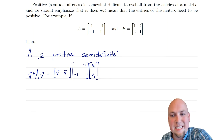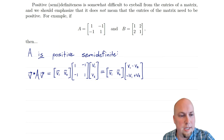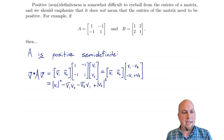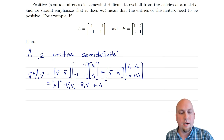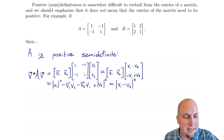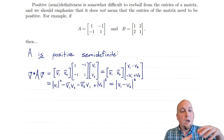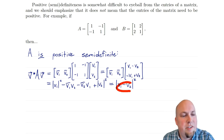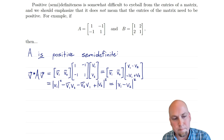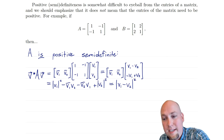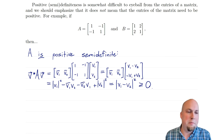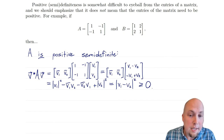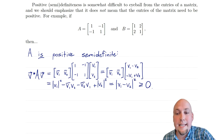Starting with the rightmost multiplication gives a column vector, then the next multiplication — row vector times column vector, that's just the dot product — gives a number. At first that might not look like it's always bigger than or equal to zero, but if you're clever you can factor it. It turns out that equals the magnitude of V1 minus V2, all squared. You can verify this by multiplying V1 minus V2 by its complex conjugate. Since absolute values and magnitudes are always bigger than or equal to zero, this quantity is always bigger than or equal to zero, and matrix A is positive semi-definite.